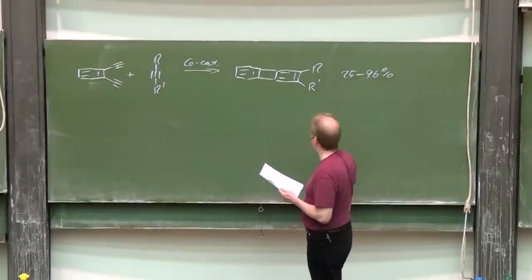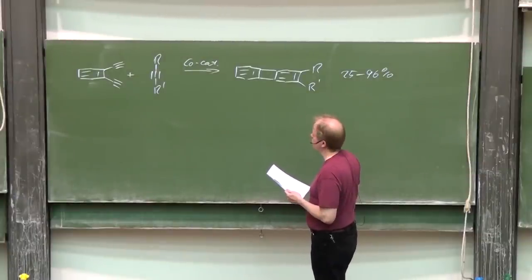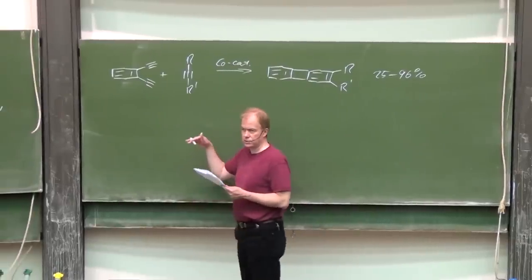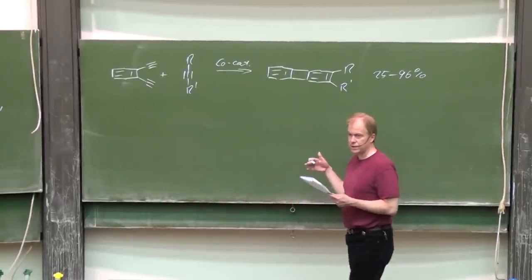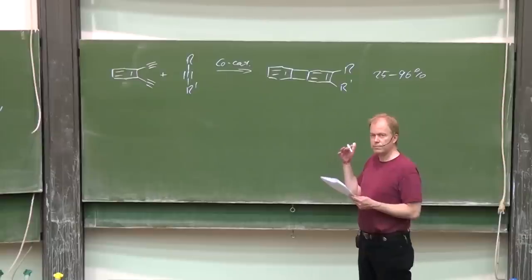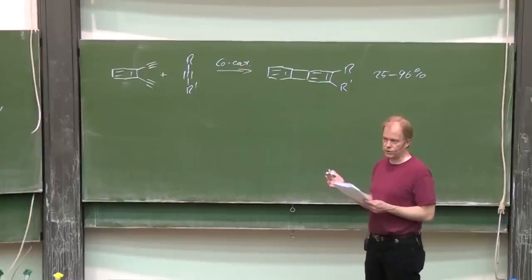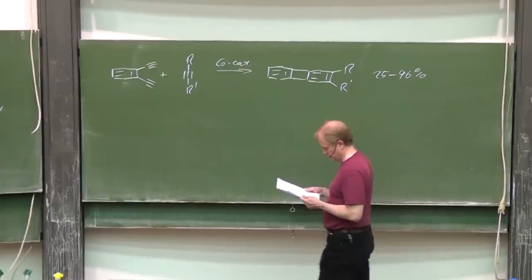To my knowledge, rather good yields are obtained when R and R' both are TMS groups. In that case, rather often the bis-trimethylsilylacetylene is even applied as the solvent. You recover, of course, the excess reagent.